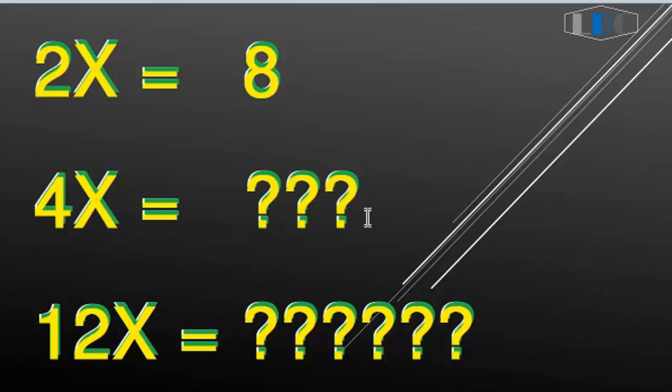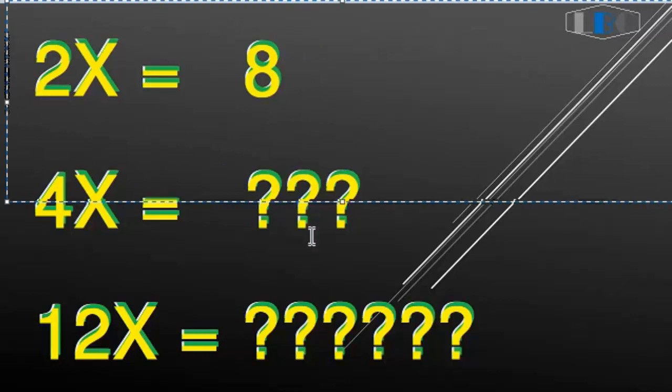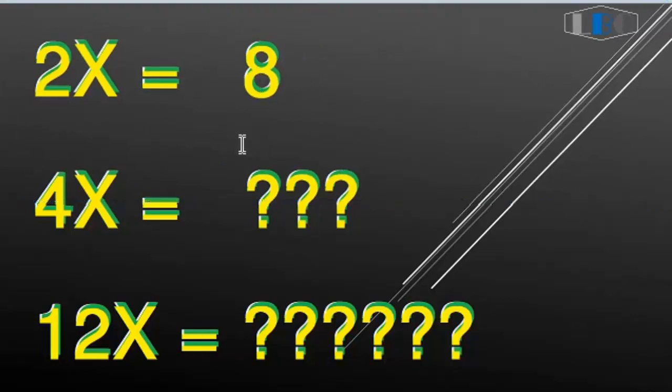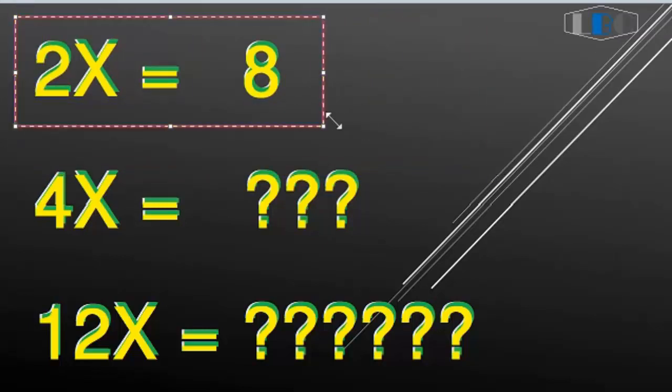So when we know the first 2X equal, okay, 8. So we can find another 2. When we know this we can find another 2. Why say like this?